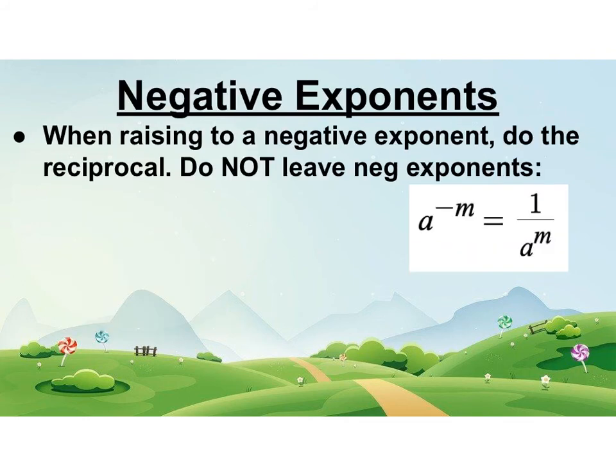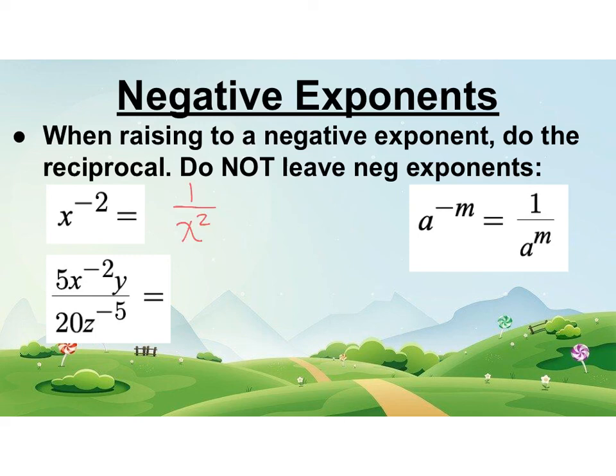Negative exponents. When you're raising to a negative exponent, you're going to apply the reciprocal. So you're going to flip the fraction. So if it's a to the negative m, then you're going to put a in the denominator and now your exponent becomes positive. Make sure you don't leave any negative exponents in your final answer. So x to the negative 2 would be 1 over x squared.